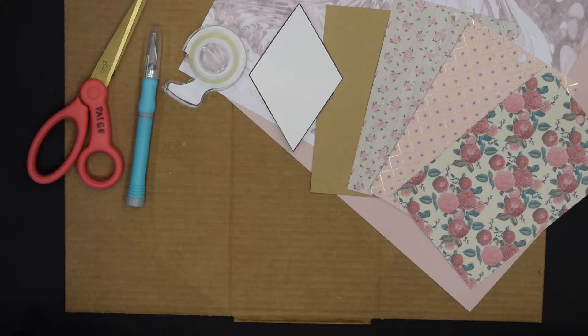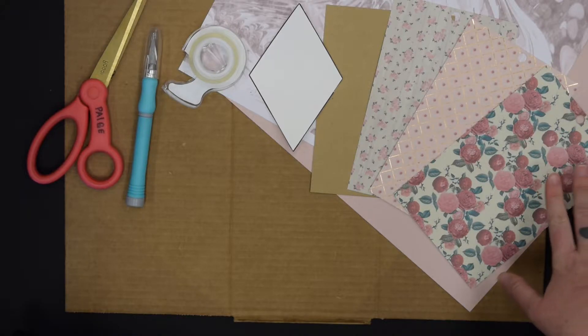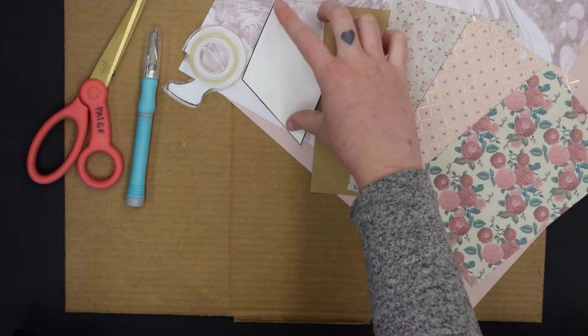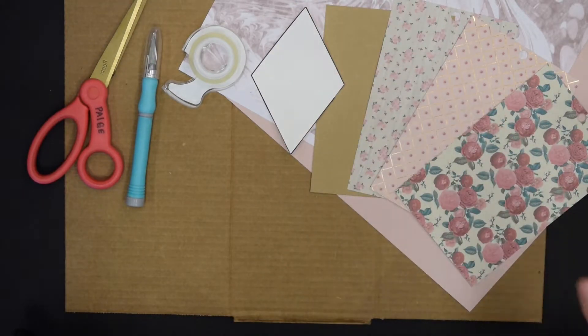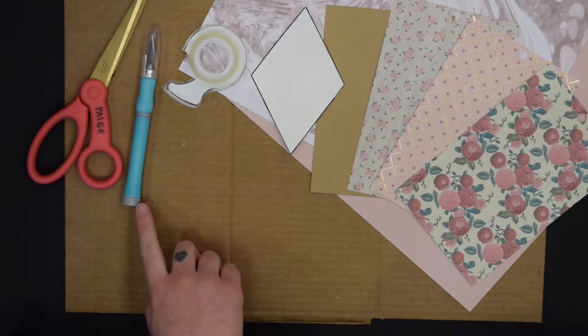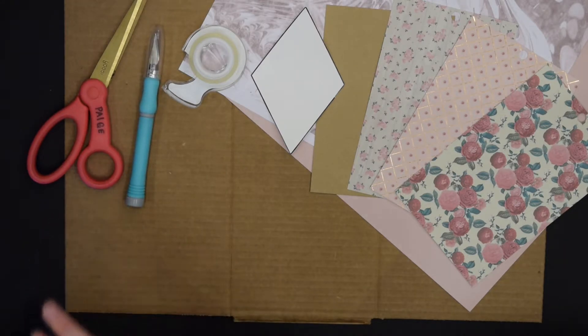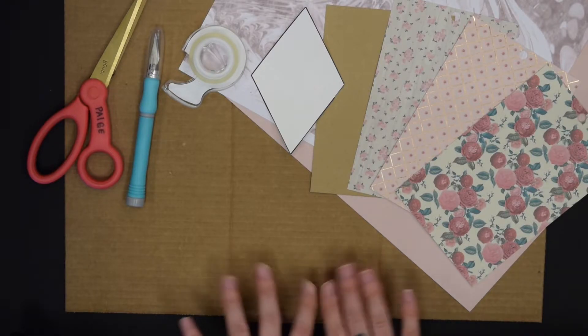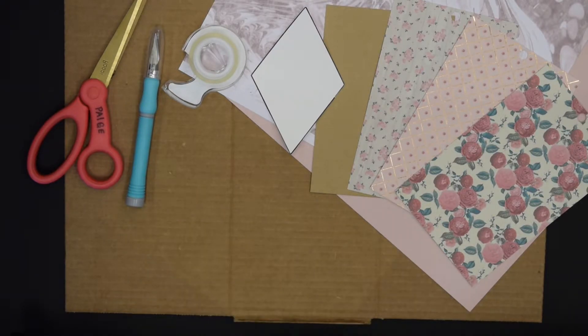For our craft today, you will need paper of your choice. I used some scrapbooking paper, this template of a rhombus that you can make in any word processor, some double-sided tape, an exacto knife, a pair of scissors, and a cutting surface. I'm using a cardboard cutout from a box. You can use whatever you want.